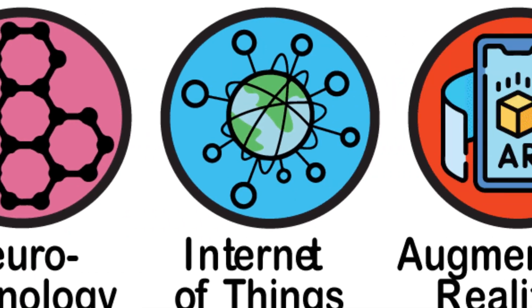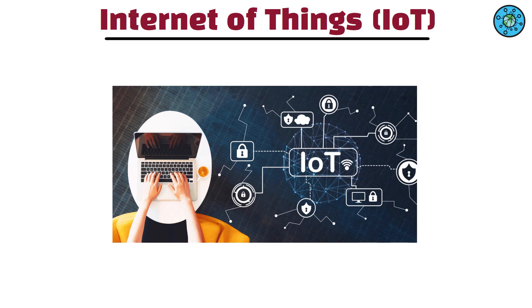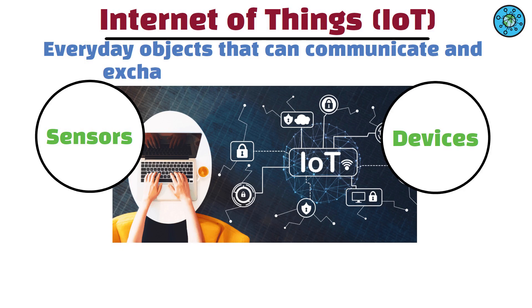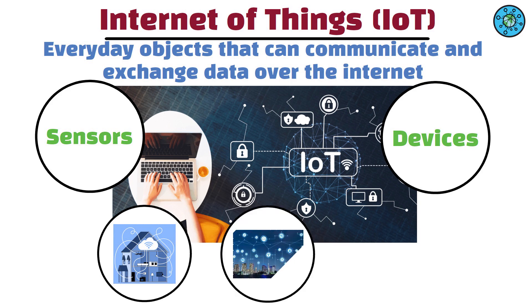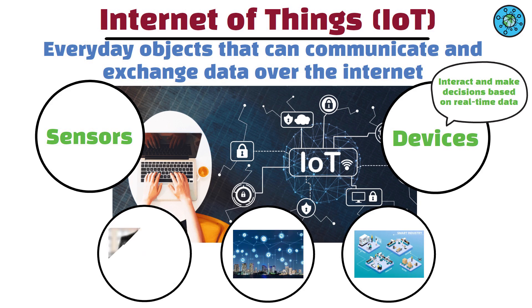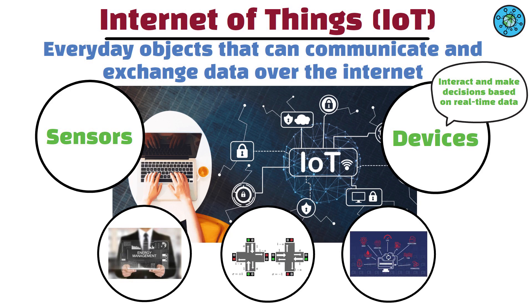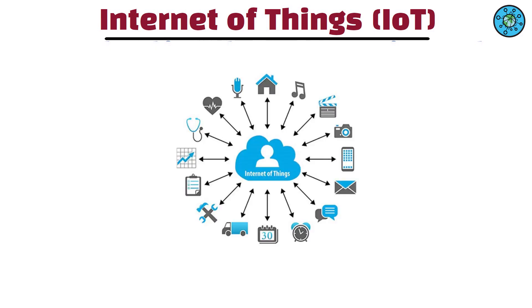Internet of Things (IoT). The Internet of Things, IoT, refers to the growing network of interconnected devices, sensors, and everyday objects that can communicate and exchange data over the internet. IoT technology enables the creation of smart homes, cities, and industries, where devices can interact and make decisions based on real-time data. Applications of IoT include energy management, traffic optimization, remote monitoring, and predictive maintenance. As the number of connected devices continues to grow, IoT has the potential to transform the way we interact with our environment and optimize resource utilization.